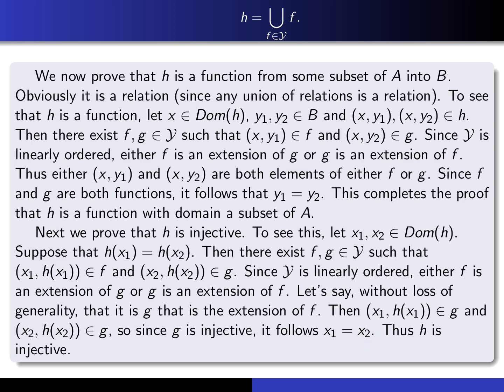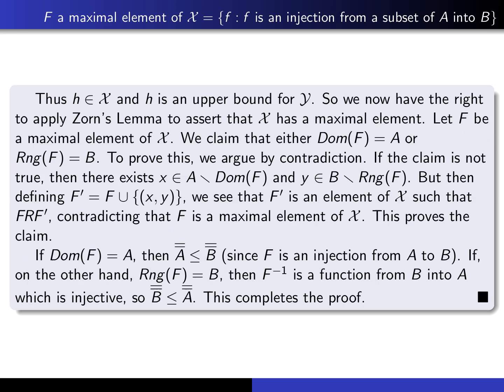We've now verified all hypotheses of Zorn's Lemma: every linearly ordered subset Y of X has an upper bound. Therefore X must have a maximal element; call it capital F. The claim is that either the domain of F is all of A, or the range of F is all of B. To prove this, I argue by contradiction. If neither holds, then the domain of F is a proper subset of A and the range of F is a proper subset of B, so we can find x in A not in the domain of F, and y in B not in the range of F.